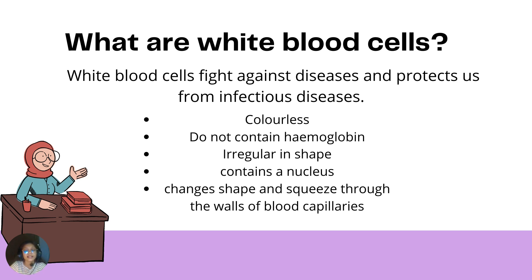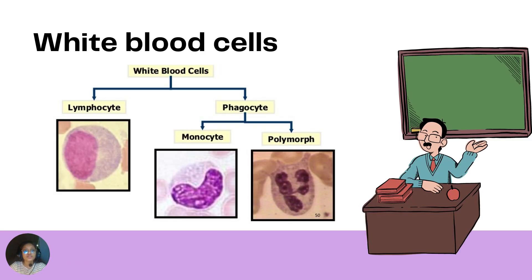White blood cells are colorless and do not contain hemoglobin like red blood cells. They are irregular and can change their shape, squeezing through the walls of fine blood capillaries into the spaces among tissue cells. There are two main kinds of white blood cells: lymphocytes and phagocytes.